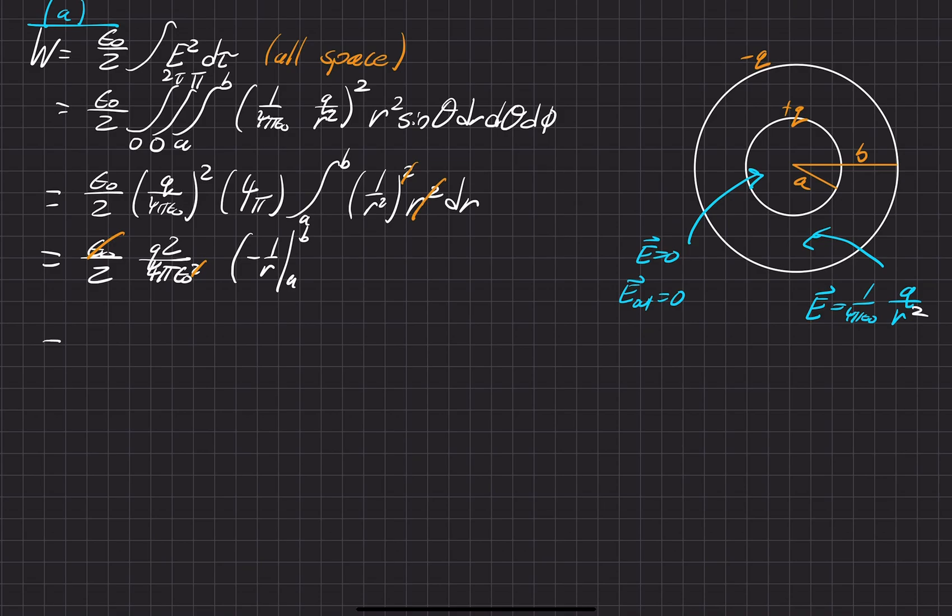1 over R evaluated from A to B. And then finally, we have our last part, which is a quantity of Q squared over 8 pi epsilon naught. And then it's going to be 1 over A minus 1 over B here.